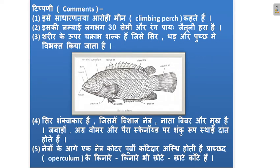Let us talk about the General Characteristics. The common name is climbing perch, also known as Anabas. The body length is about 30 cm. The body is covered with cycloid scales, which are also called chakrat shells.